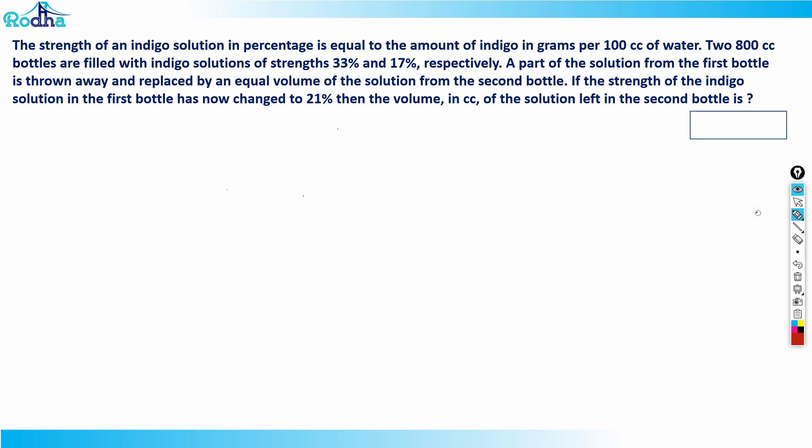Hi guys, this is a question from arithmetic mixture and solutions from CAT 2021 slot 1. The strength of an indigo solution in percentage is equal to the amount of indigo in grams per 100 cubic centimeter of water. Two 800 cubic centimeter bottles are filled with indigo solutions of strength 33% and 17% respectively. A part of the solution from the first bottle is thrown away and replaced by an equal volume of the solution from the second bottle.